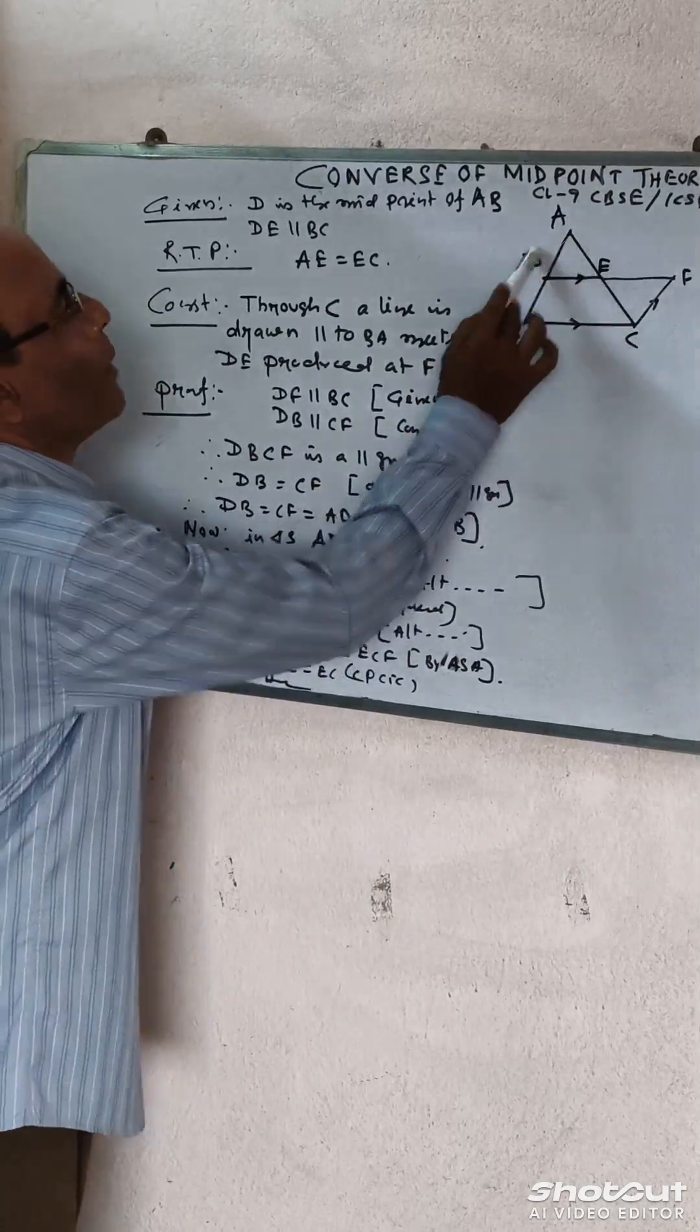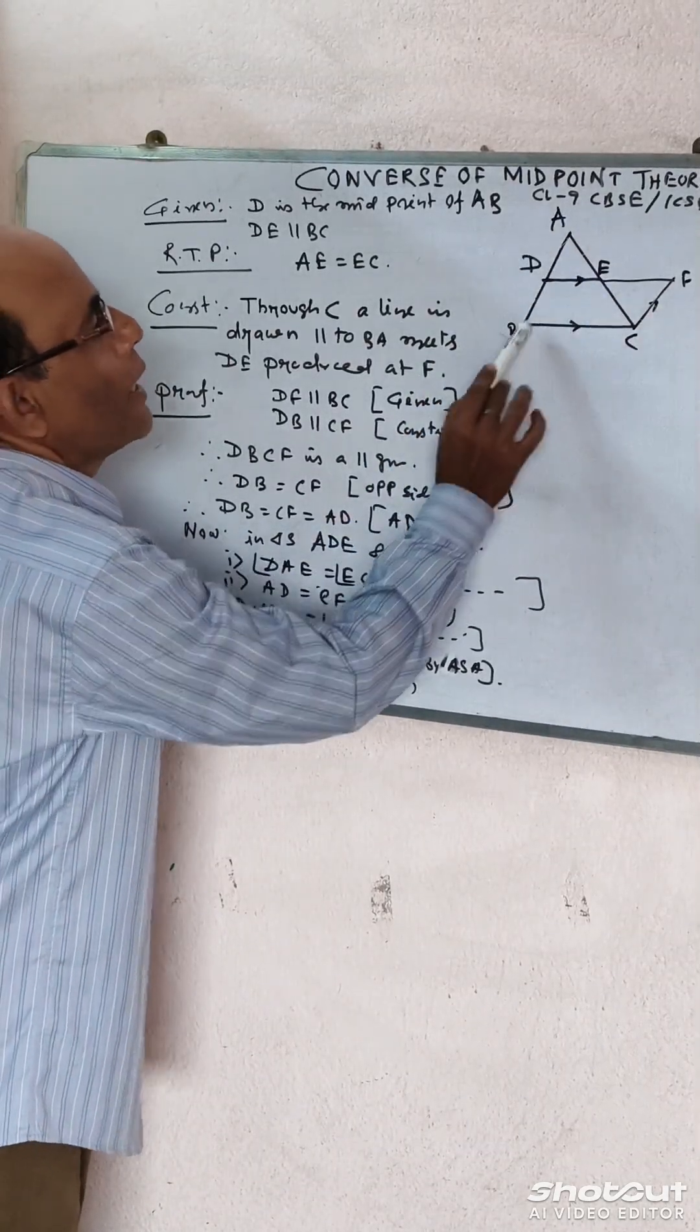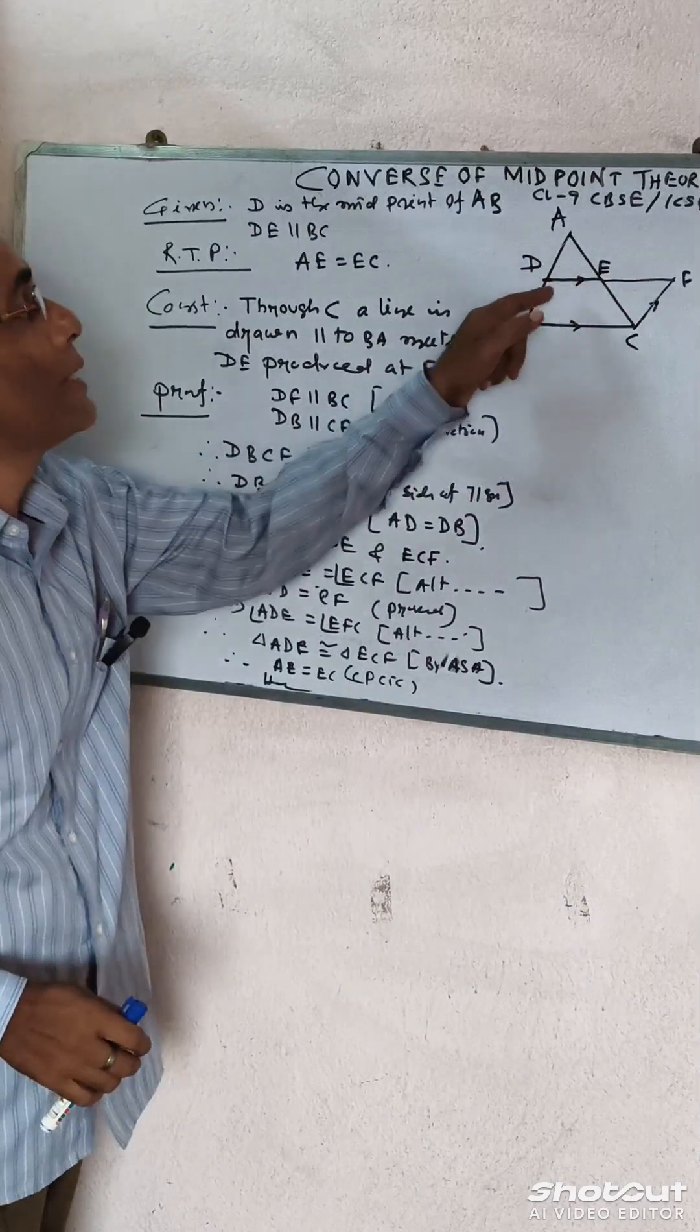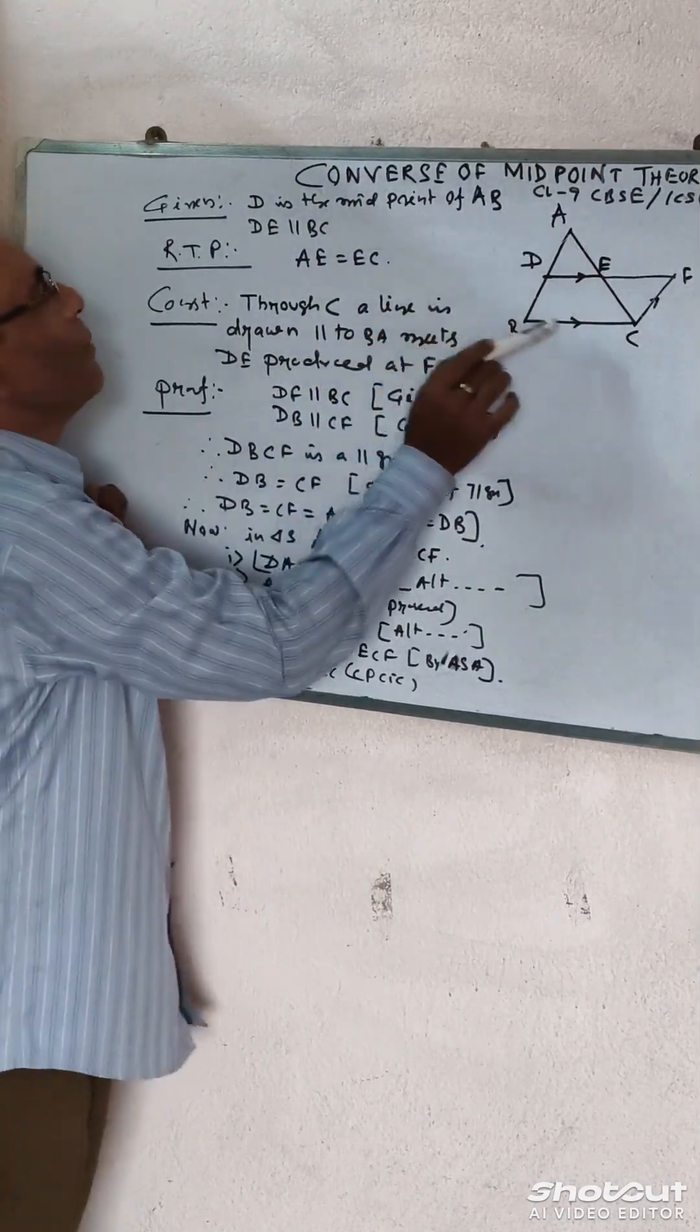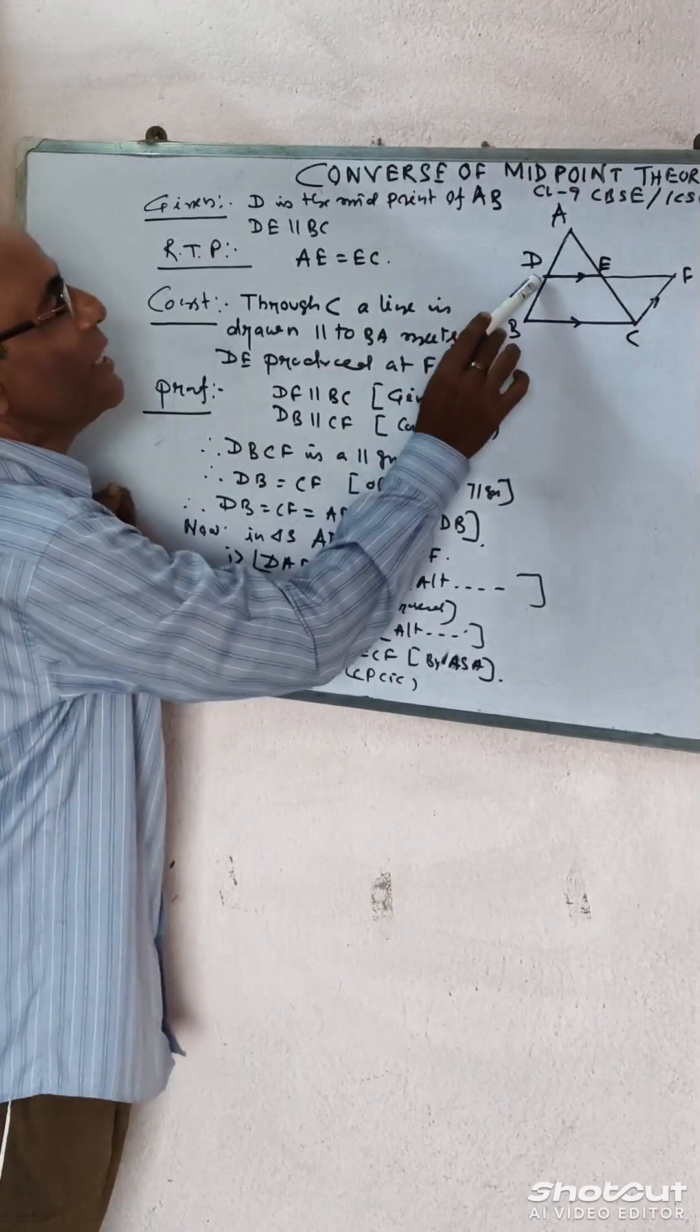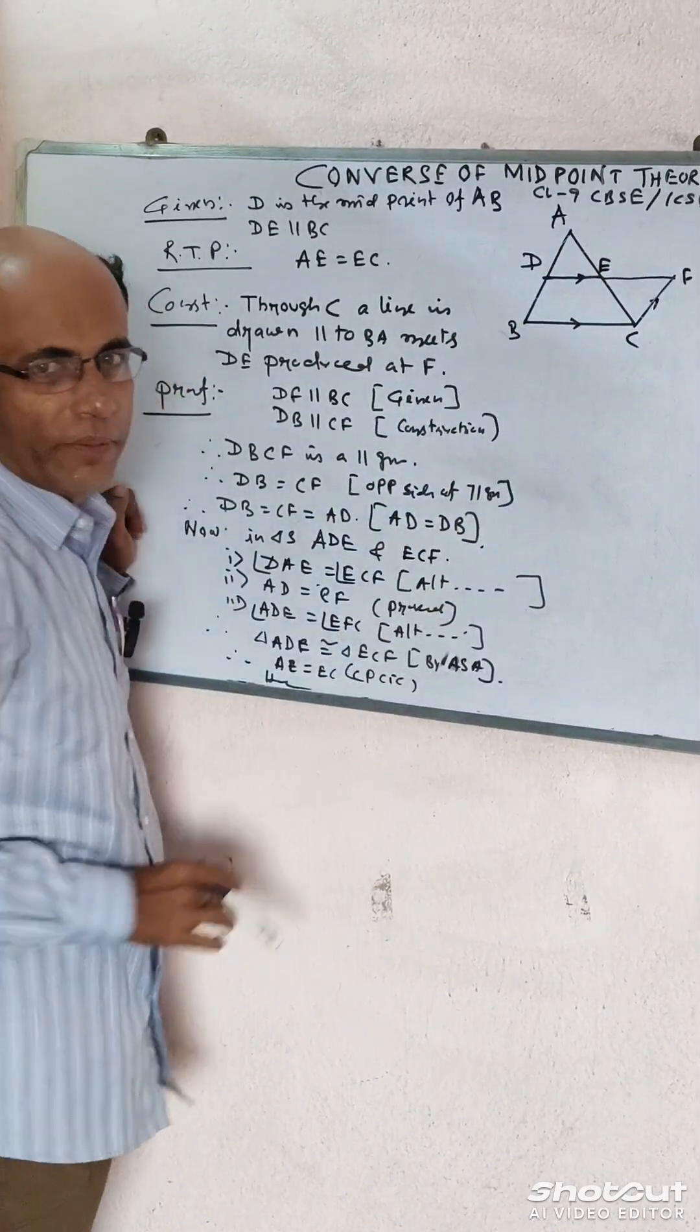If a line is drawn through the midpoint of one side of a triangle and parallel to another side, then it bisects the third side. That means in triangle ABC, D is the midpoint of AB and DE is parallel to BC.